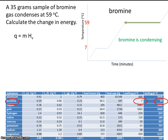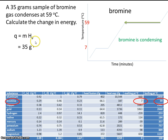So let's plug in what we know. It says we have a 35-gram sample, so the mass is 35 grams. And now we just need to know the heat of vaporization. The heat of vaporization is listed here — it's 187 joules per gram.